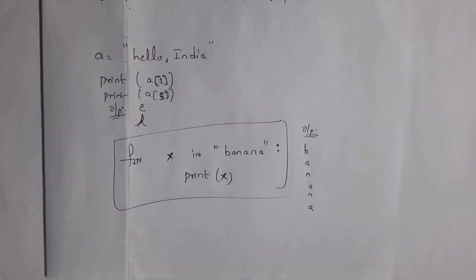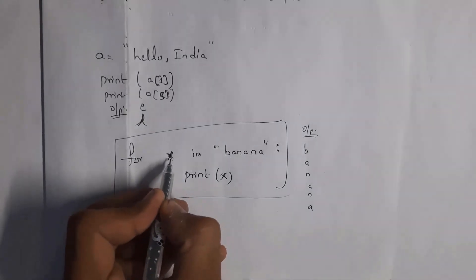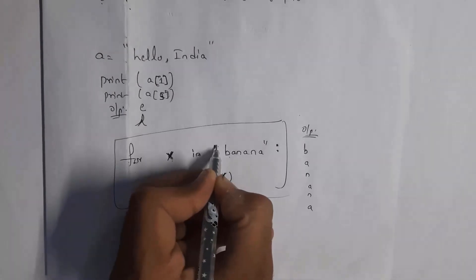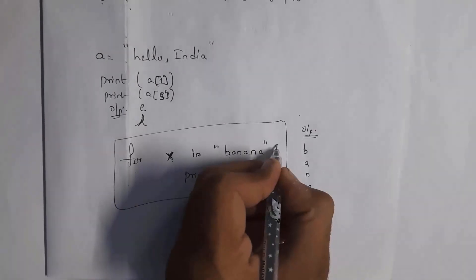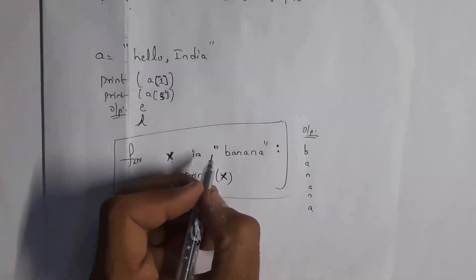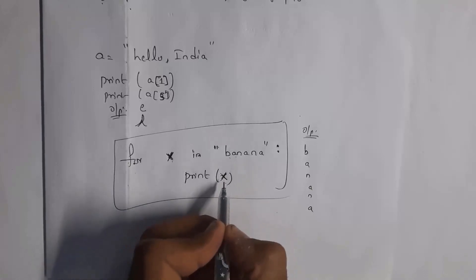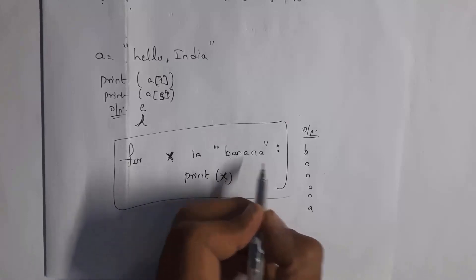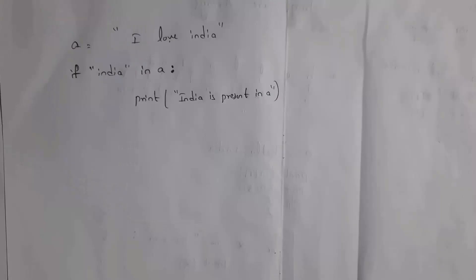You can also loop through a string by using a for loop. I written 'for x in "banana"' — x is the variable name and banana is the string. Give a colon and inside the for loop write print x. It will take each character one by one. First it will take b and print b, then a and print a, and similarly n, a, n, a. So it will print b, a, n, a, n, a line by line.